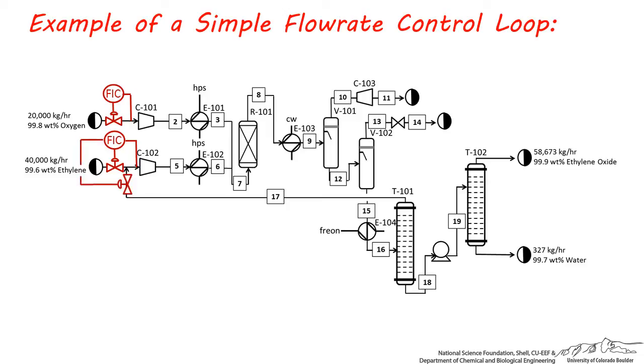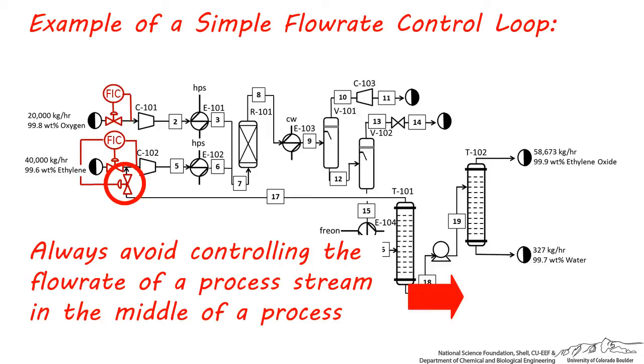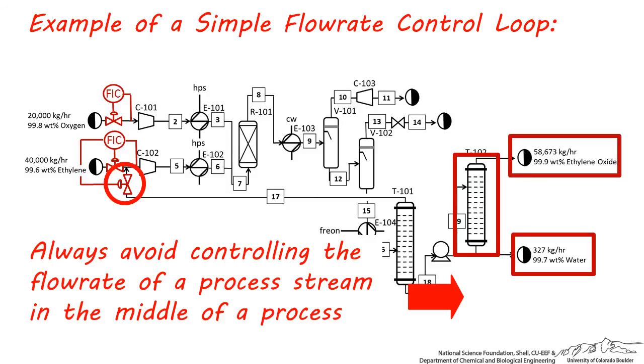There's also another reason not to have a control valve on this recycle stream. You should always avoid trying to control the flow rate of a process stream in the middle of a process because this can cause streams to be diverted. For example, trying to control the distillate flow coming from this distillation column will alter the bottom's flow of the column, which will affect the flow rate going into T102, which will change the flow rate and concentration of these final streams.